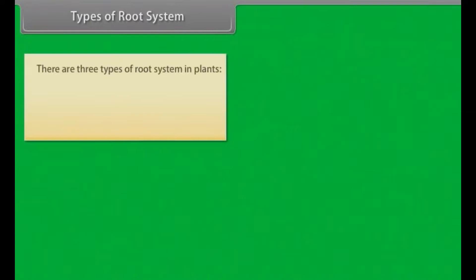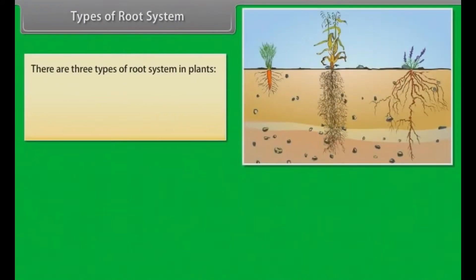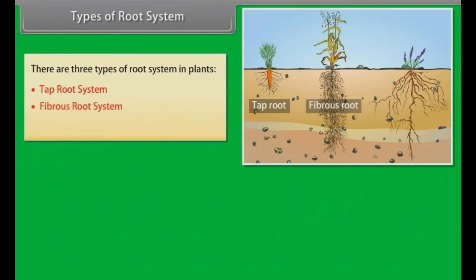There are three types of root system in plants: tap root system, fibrous root system, and adventitious root system.